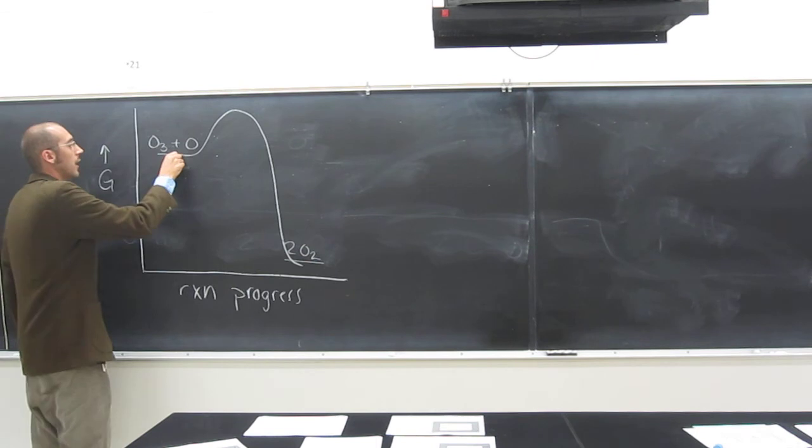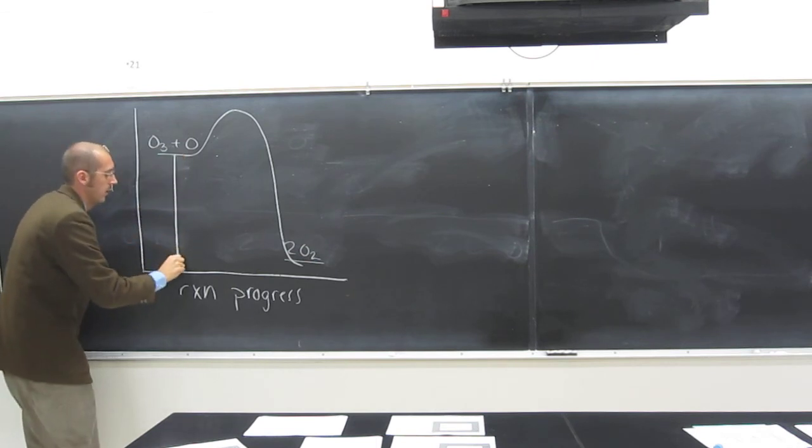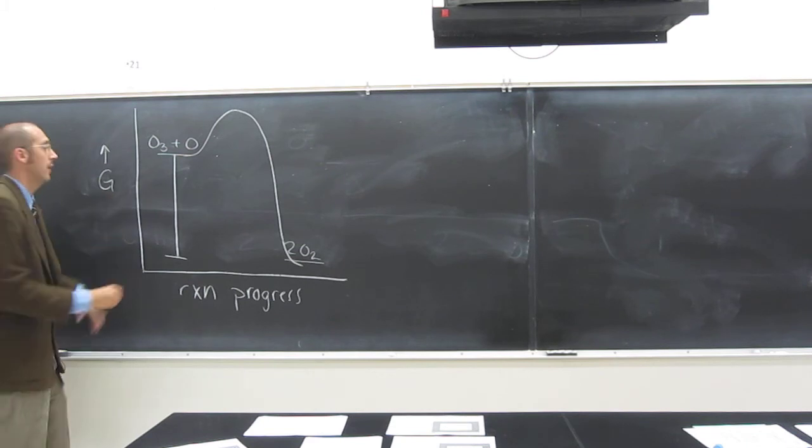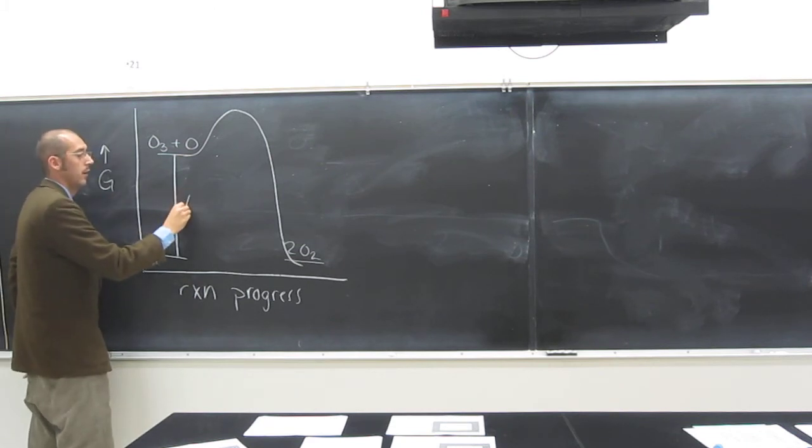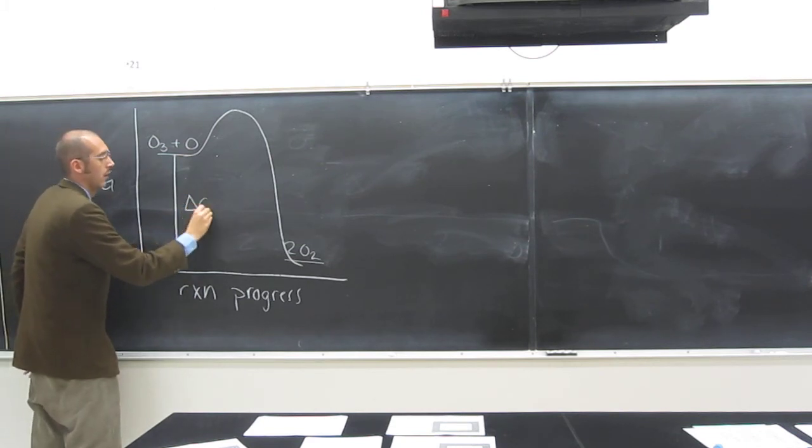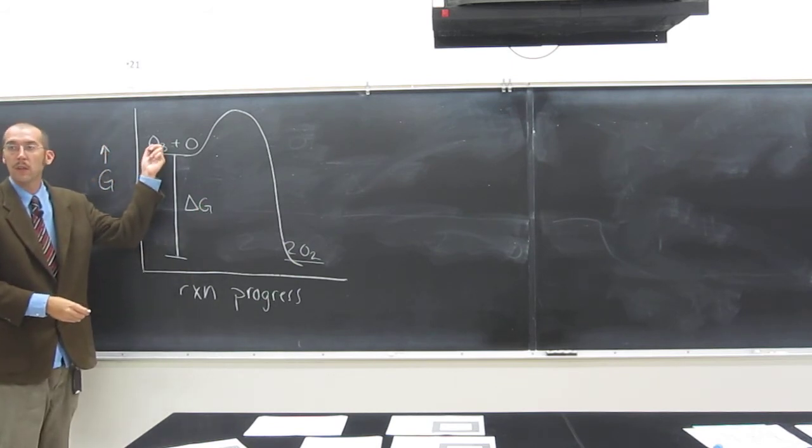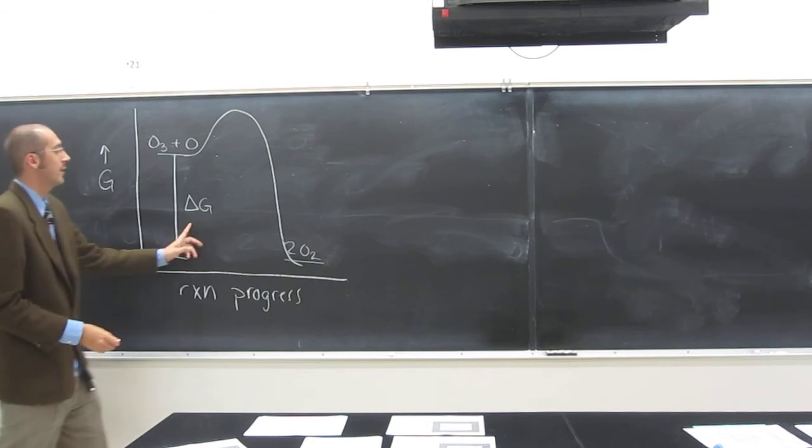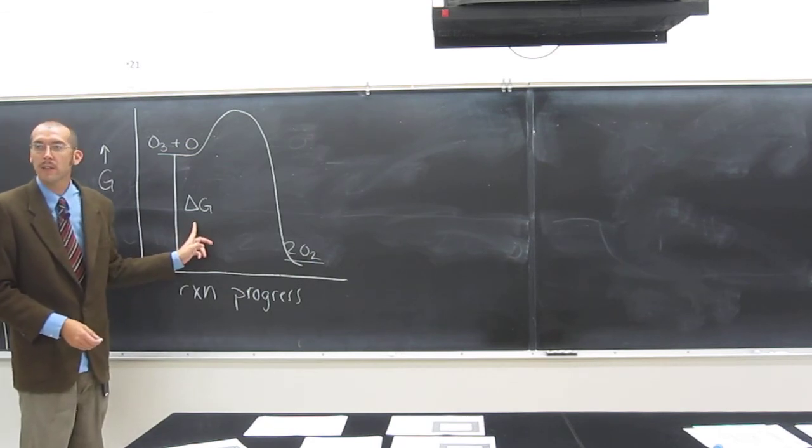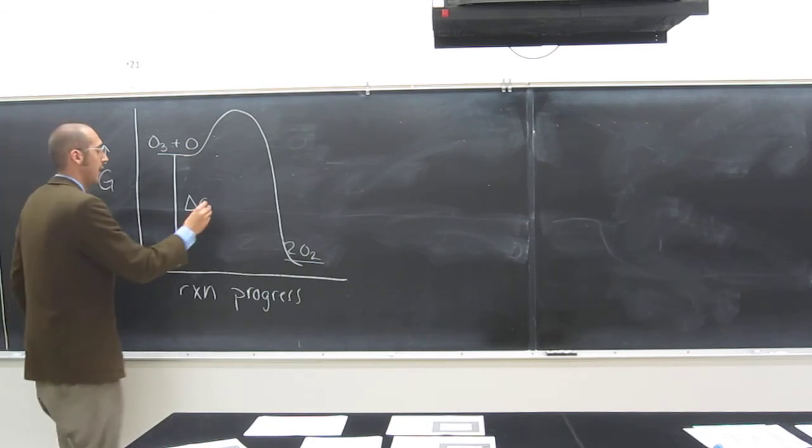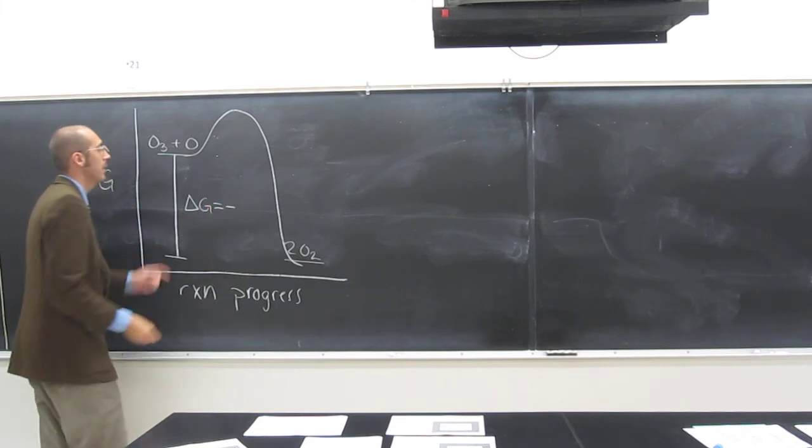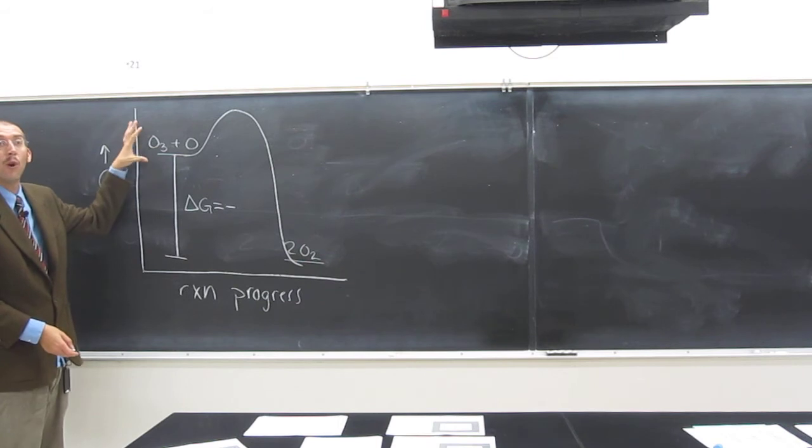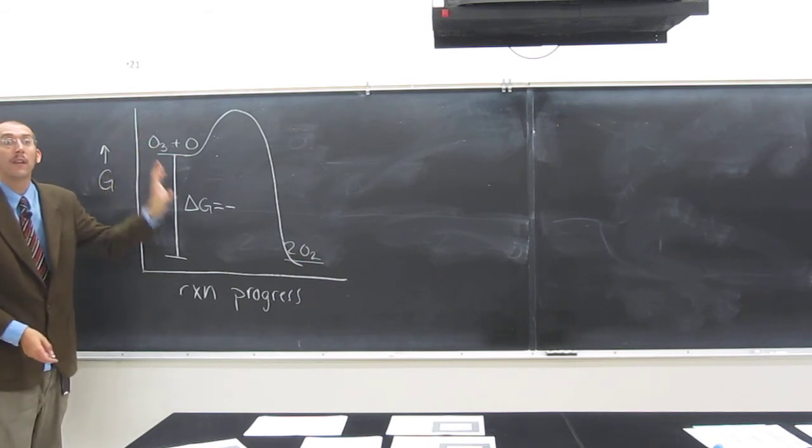So remember, here to here, if we're talking about G, right, is going to be what? Delta G. Right? Because that's the difference between the reactants and the products. In this case, delta G is going to be positive or negative? Negative. Right? Why? Because the reactants have more internal energy than the products do.